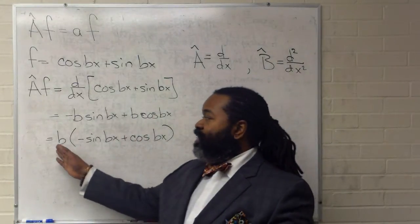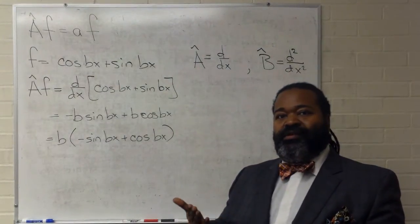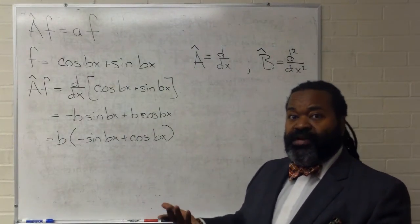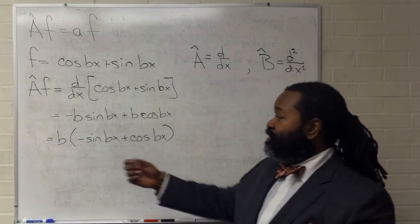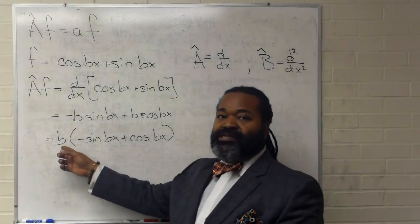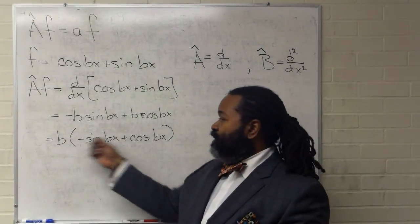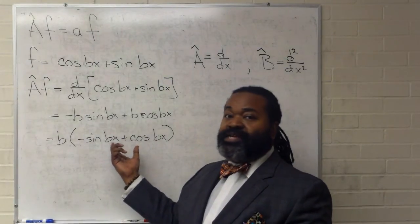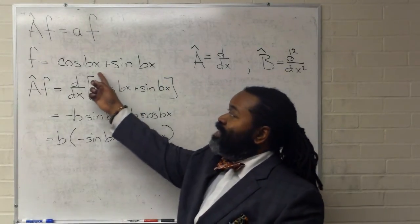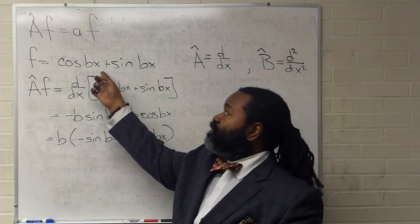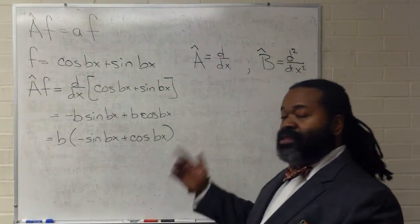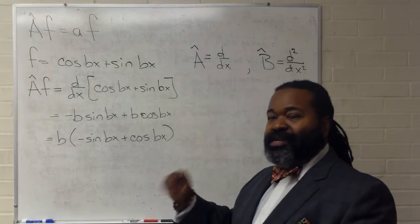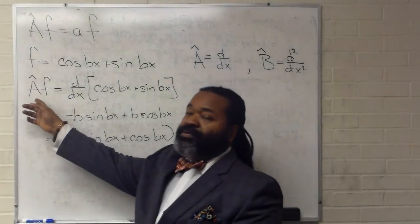Now, we have something that looks like the ending point for checking whether or not we have a satisfied eigenvalue condition, and that we have something that is a constant times a function. However, this function, negative sine bx plus cosine bx, is not equal to cosine bx plus sine bx. So, that function is not an eigenfunction of operator A.